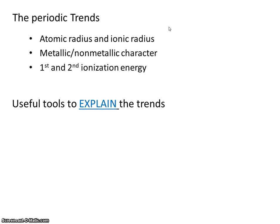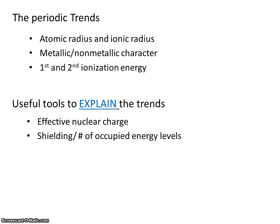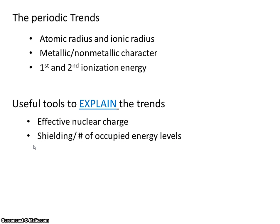Here are a couple of useful tools that help explain the trends. There are two: effective nuclear charge and shielding. Another way of saying shielding is the number of occupied energy levels — that means the number of energy levels that are occupied with electrons. Usually we call it shielding for short. It should be noted and remembered that effective nuclear charge and shielding are not periodic trends. Rather, they are two things that help us explain the trends.